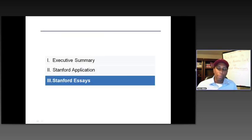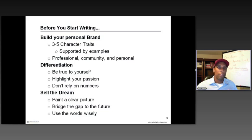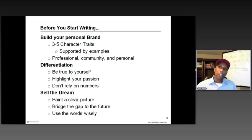Now we'll get into the meat of Stanford — the essays. Before you start writing, you need to think about your brand. You need to think about what makes you different. If you're McDonald's, it's speed to market, consistency, cleanliness. What is your brand? Maybe it's innovation, creativity, analytical skills, or your ability to motivate others. Those character traits are marginal if you can only mention them — they really drive home their importance when you have stories behind them.